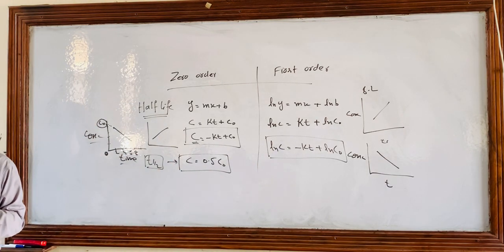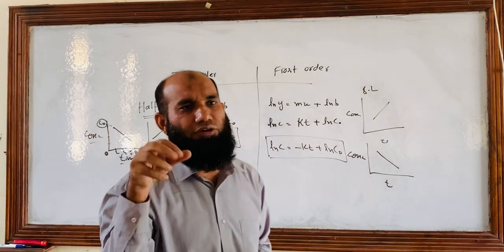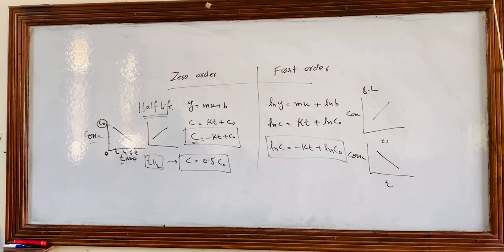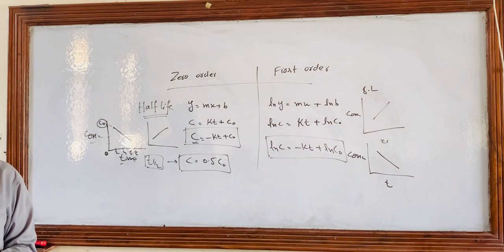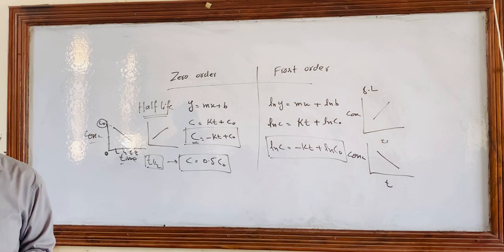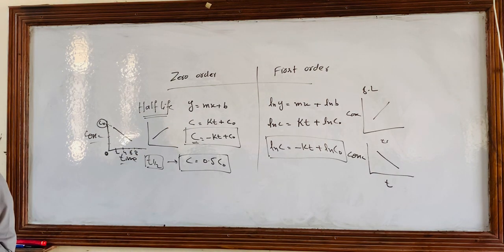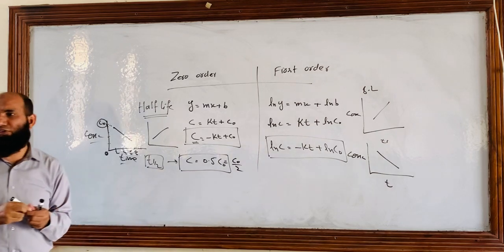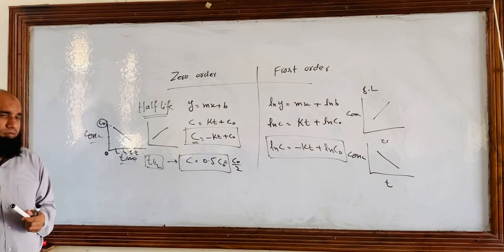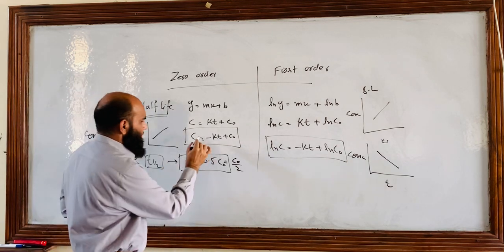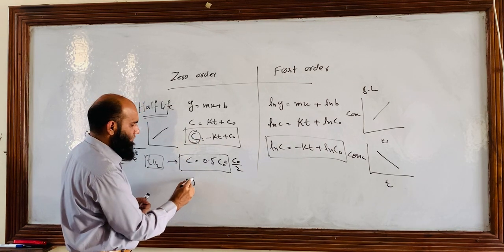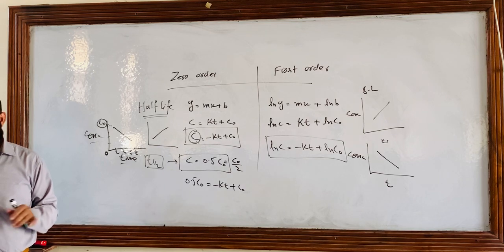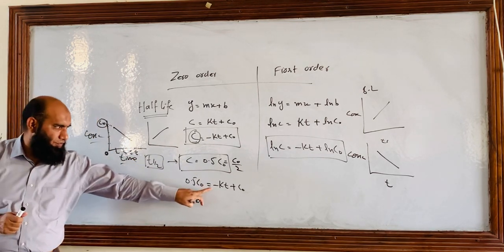The full concentration is C₀ and half concentration is 0.5C₀, which is C₀/2. We will replace C with 0.5C₀ in the zero order equation: 0.5C₀ = -kt + C₀. Remember, we are discussing IV injection, so we write minus here. For increasing concentration curves, the slope is positive.